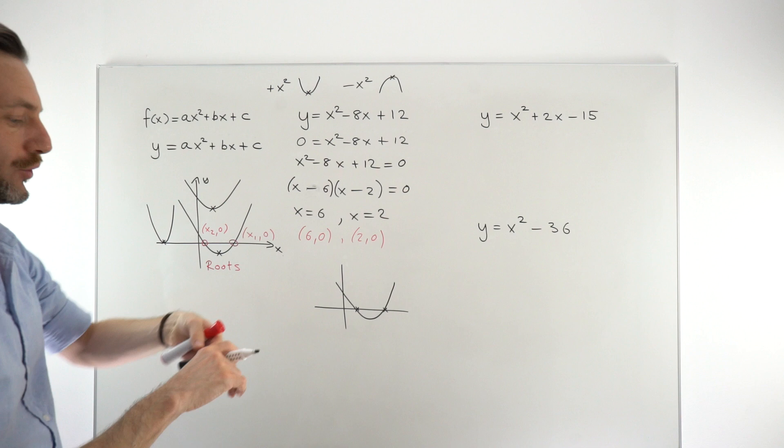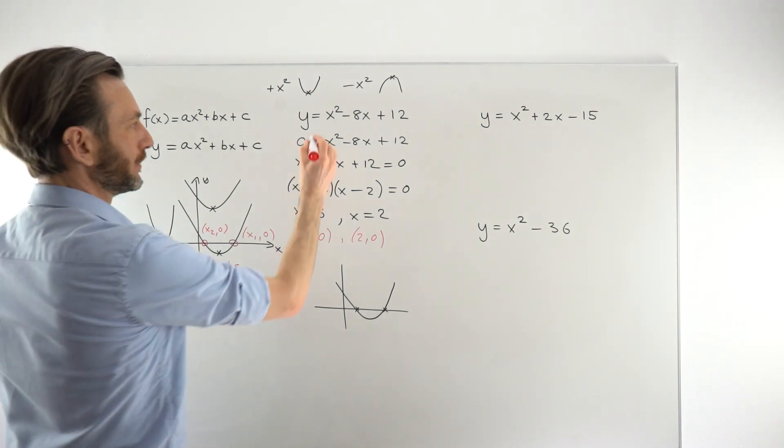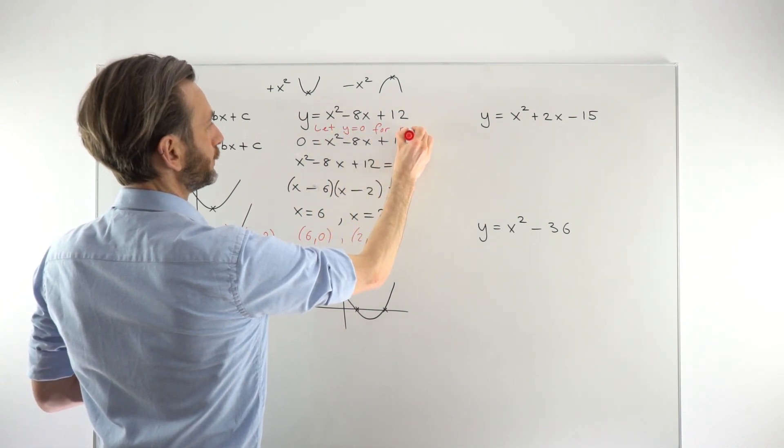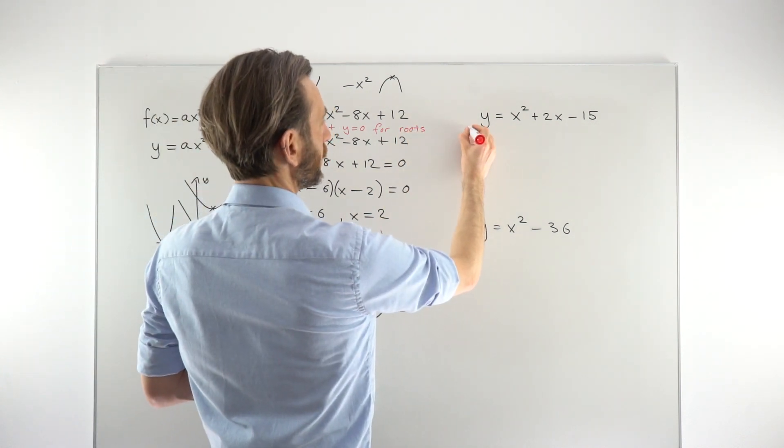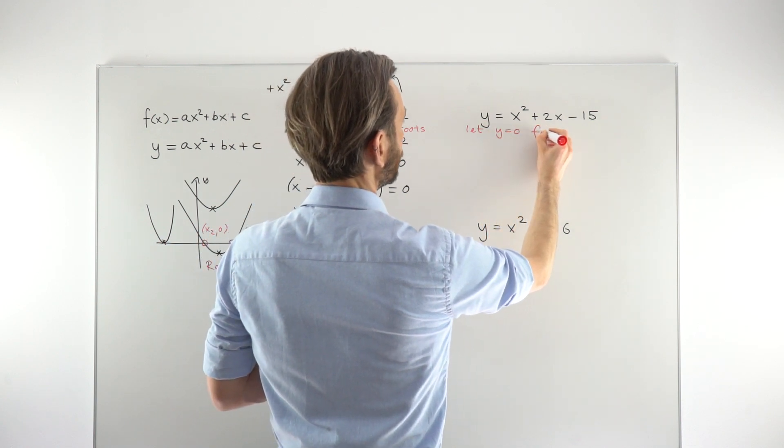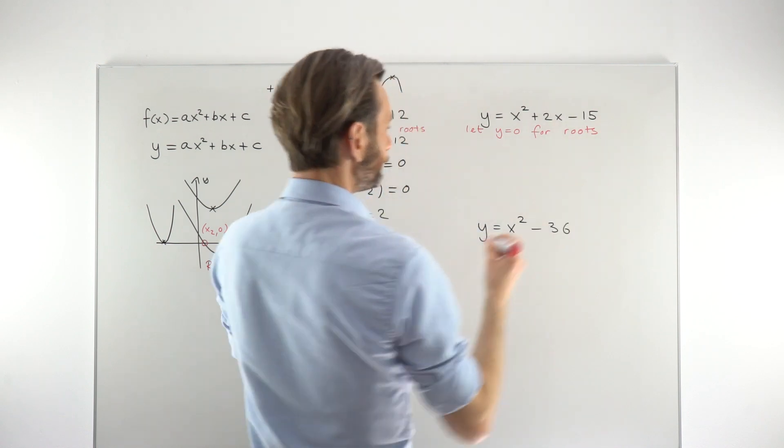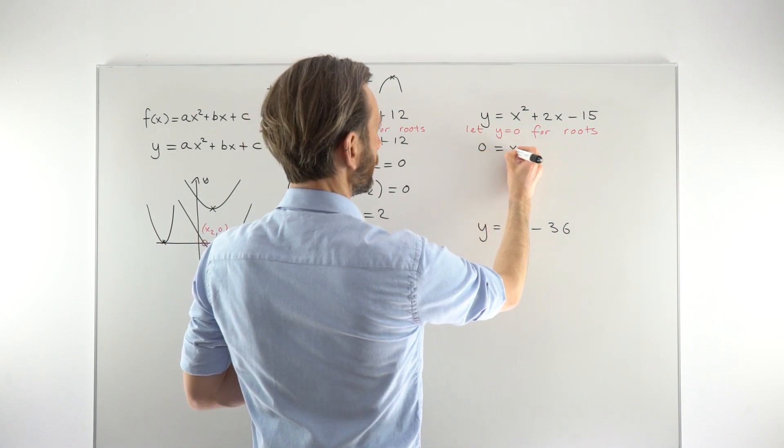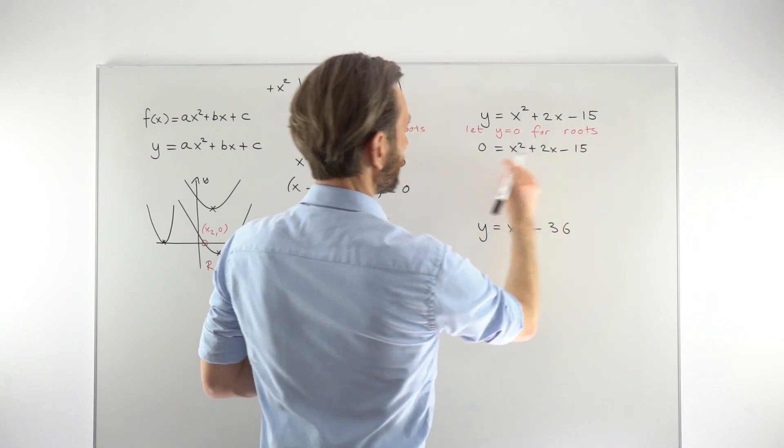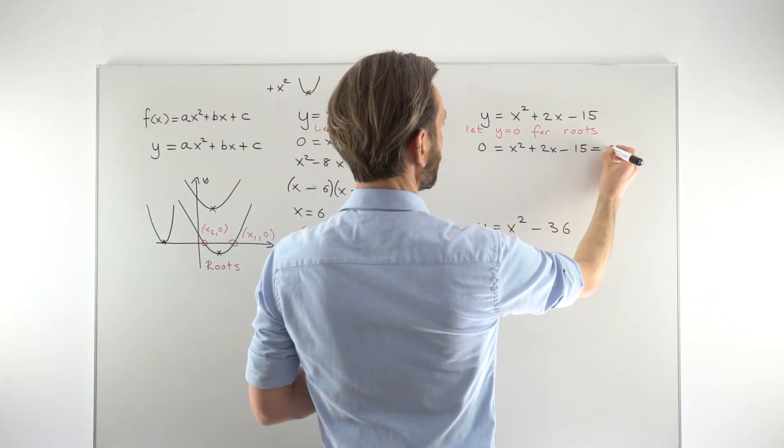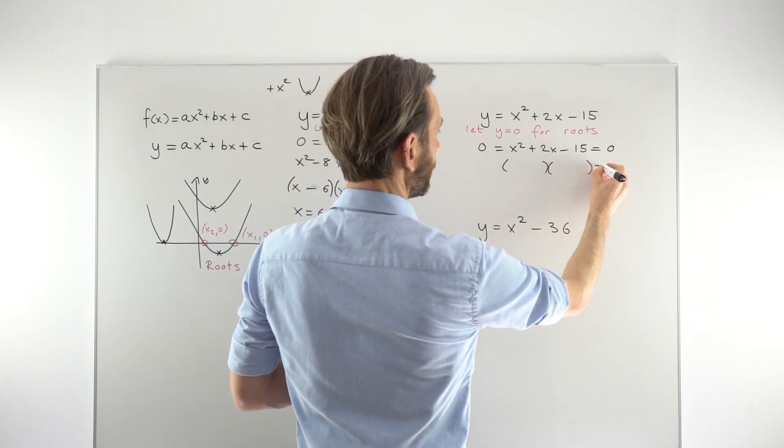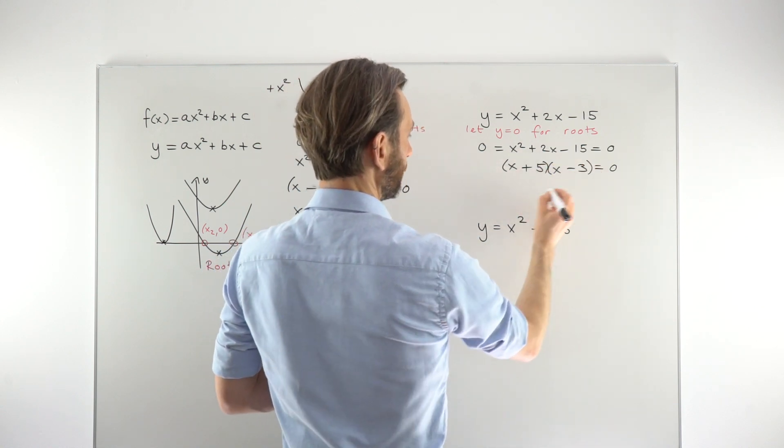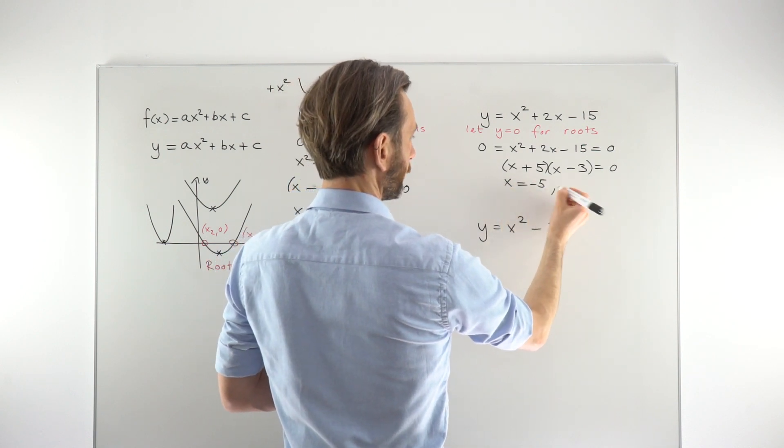So that's essentially what we're doing in these questions. You might even want to put a line in here where you say something like, let y equal 0 for the roots. You don't have to do that. It's maybe a good practice. We're just going to take the same approach with these two examples here. So we're going to let y be 0, substitute that in for y, and then just go ahead and solve the equation.